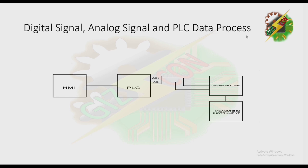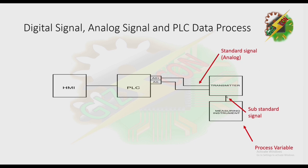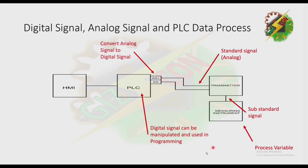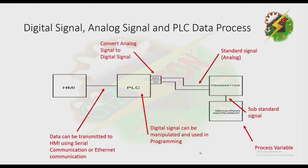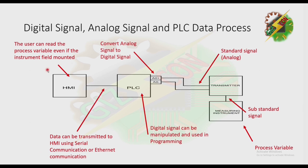Let's discuss digital signal, analog signal, and PLC data processing. When a process variable is measured, the measuring instrument releases a substandard signal. The transmitter then converts the substandard signal into a standard analog signal. After that, it converts the analog signal to a digital signal. The digital signal can be manipulated and used in programming, and the data can be transmitted to an HMI using serial or Ethernet communication. The user can then read the process variable even if the instrument is field-mounted.